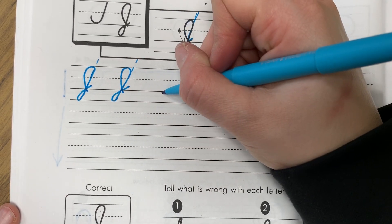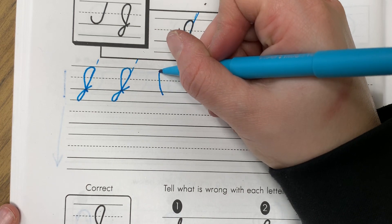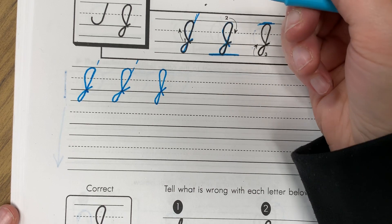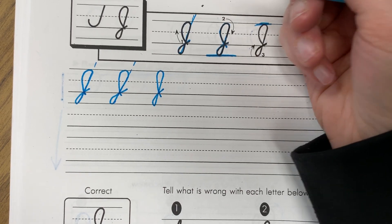Let me show you again. Right here, up to the top, down, around, and back through. So that's the cursive letter capital J.